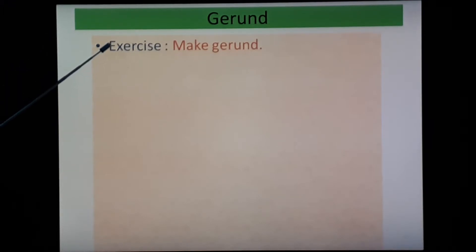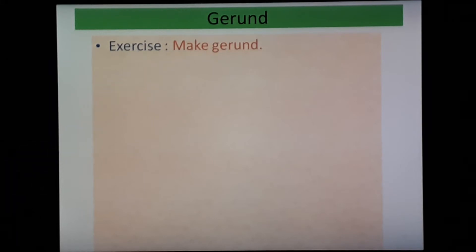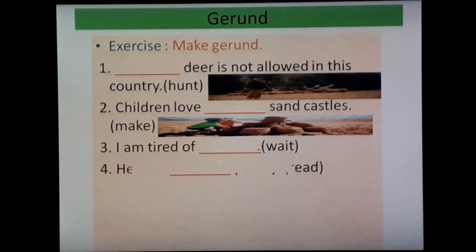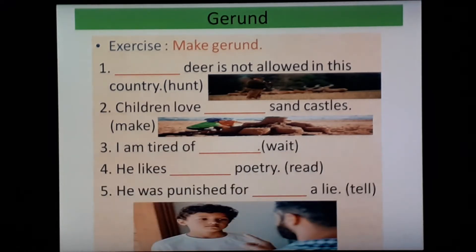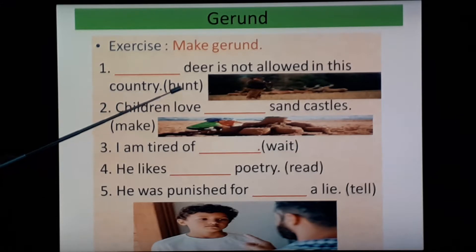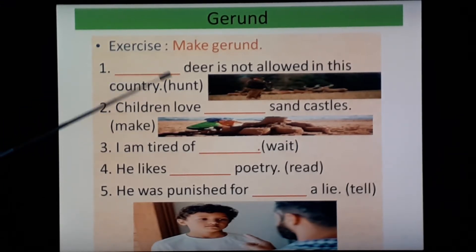Let's do an exercise: make gerunds. Five sentences are given, and in brackets you have the base form of the verb. You have to make it a gerund by adding -ing. Do it now, then we will check the answers.